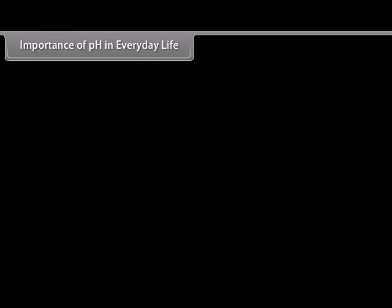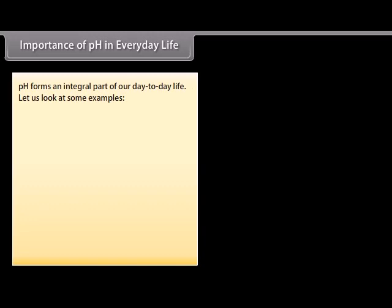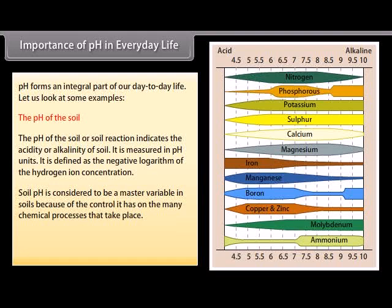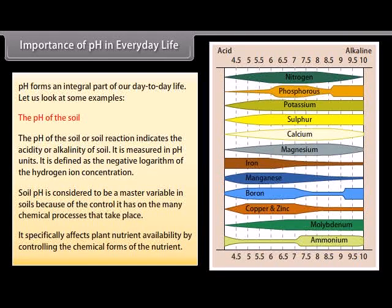Importance of pH in everyday life. Let us look at some examples from our day-to-day life where pH forms an integral part. The pH of the soil. The pH of the soil or soil reaction indicates the acidity or alkalinity of soil. It is measured in pH units. It is defined as the negative logarithm of the hydrogen ion concentration. With the increase in the amount of hydrogen ions in the soil, the soil pH also increases, leading to being more acidic. Soil pH is considered to be a master variable in soils because of the control it has on the many chemical processes that take place. It specifically affects plant nutrients' availability by controlling the chemical forms of the nutrient.